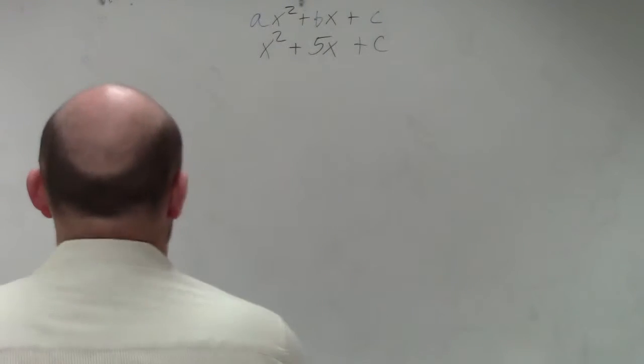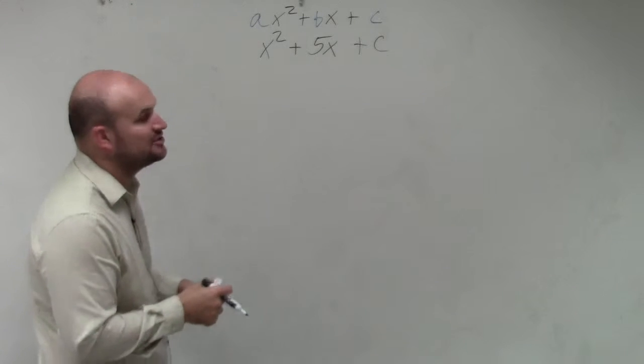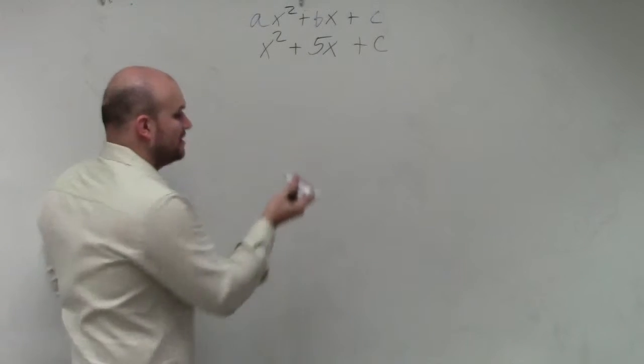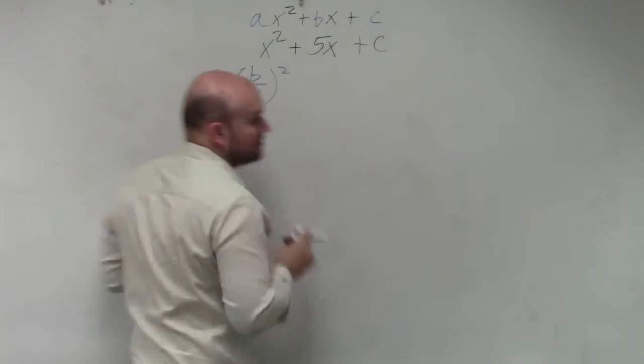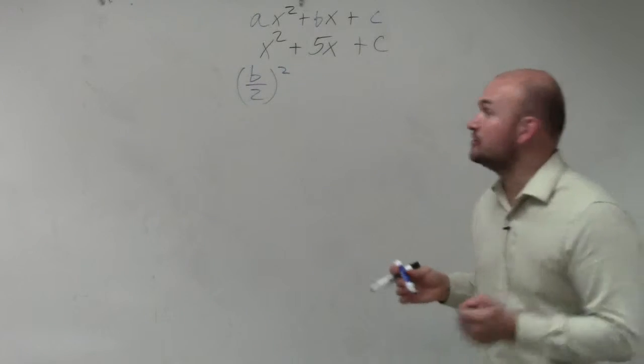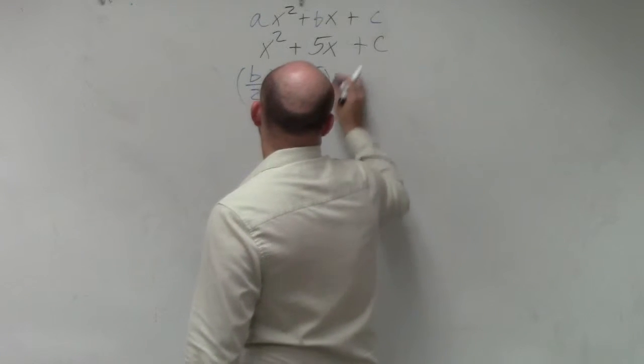OK. So when you're looking for the value of c, again, we're just going to do the exact same process I did before. You're going to take b divided by 2 and square it. So b, in this case, is going to be 5. So I have 5 divided by 2 and square it.